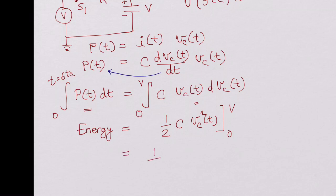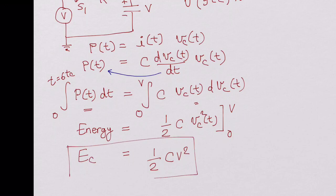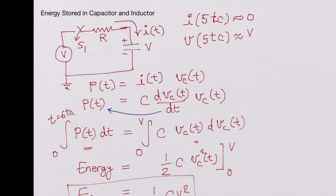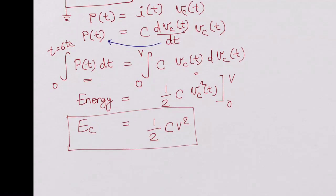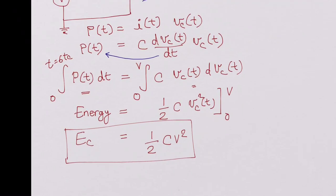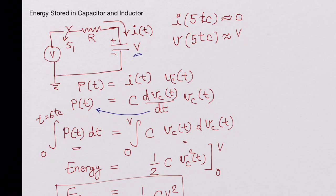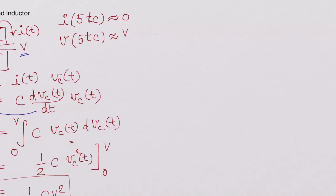Writing out the result, the energy stored in a capacitor is ½CV². So once the voltage V is established across the capacitor, the energy stored in that capacitor is ½CV².